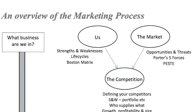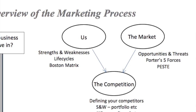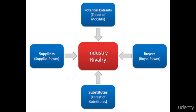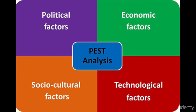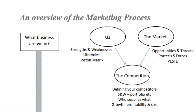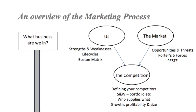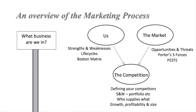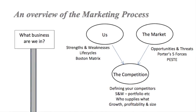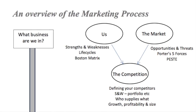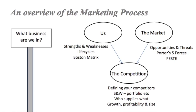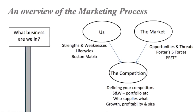You also need to look at the market, and we'll be looking at some models for understanding markets — particularly Porter's five competitive forces and the PEST model. Once we've looked at ourselves and the market, we can then bring them together and look at what our competitors are like compared to us: who are our competitors, what are their strengths and weaknesses, and what are they supplying and to whom?